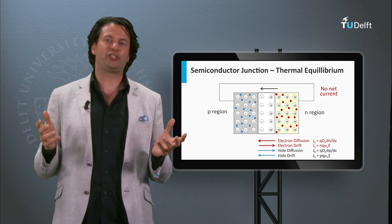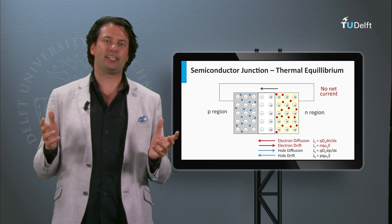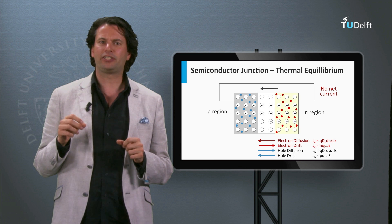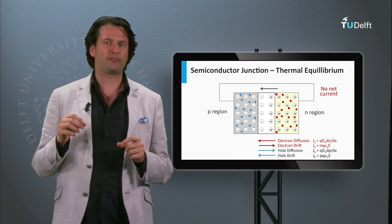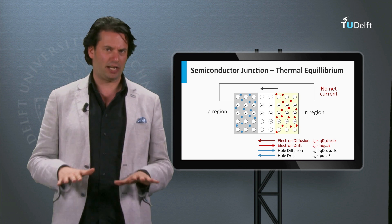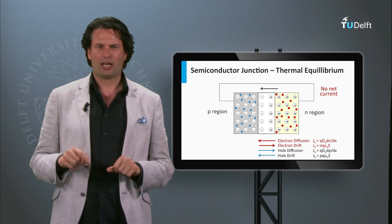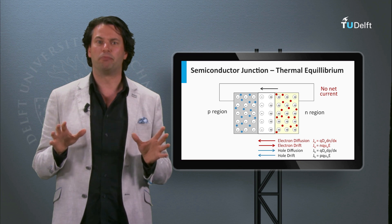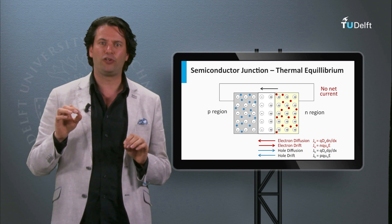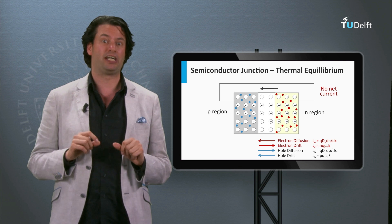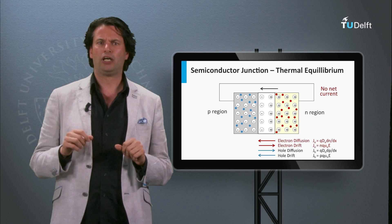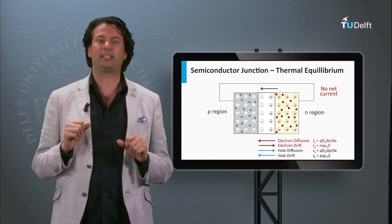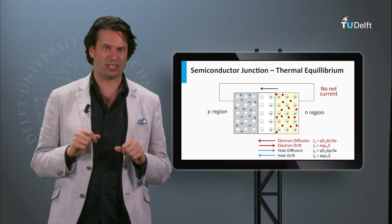We have discussed a p-n junction in the dark in thermal equilibrium. In this situation, the diffusion and drift over the depletion zone are in balance. Now we are going to disturb the equilibrium by applying a bias voltage or shining light on the p-n junction. We will see that an illuminated p-n junction acts like a solar cell.